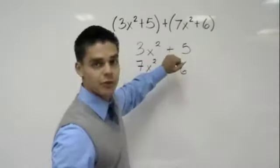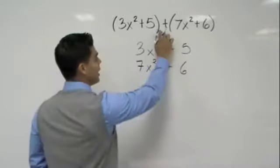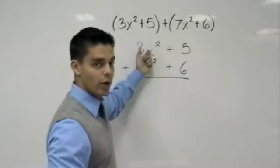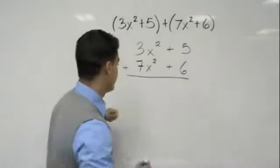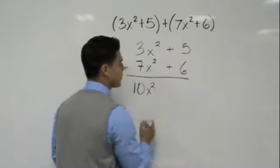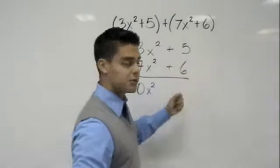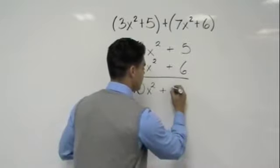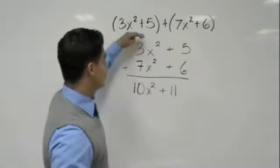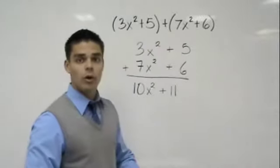Now I can just go ahead and add. So we know when we combine 3x squared plus 7x squared, we get 10x squared. Positive 5 plus 6 would give us plus 11. Not bad at all, huh guys? Just remember, start by lining them up one on top of each other.